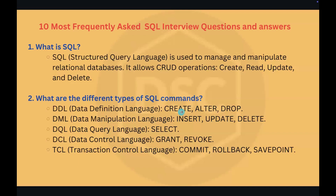CREATE is used to create new database objects — for example, tables, views, and schemas. ALTER is used to modify existing database structure — for example, to add or remove columns. DROP is used to delete database objects completely. If you use the DROP command, it will delete the table as well as the structure of the table.